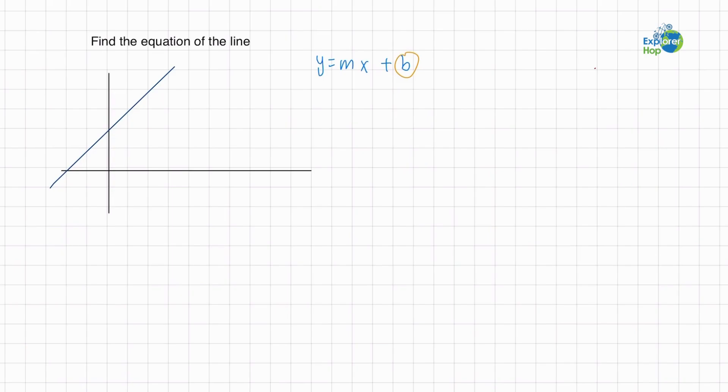b is the y-intercept of a line. So as we look at the graph here, the line intercepts the y-axis at 2. So let's write that in first. y equals mx plus 2.